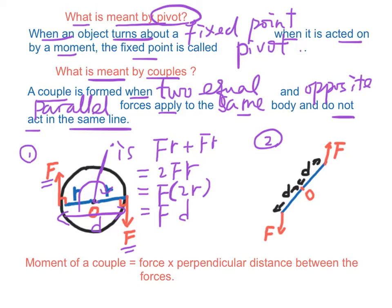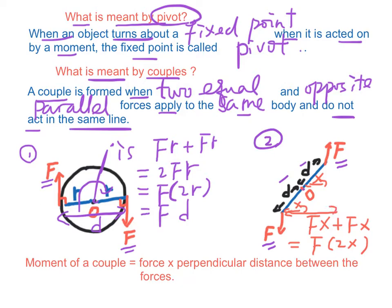Example 2: if the two forces F act in opposite directions on the rod of length 2D, then the total moment of the force about point O is F times X plus F times X, which equals F times 2X. Here 2X is the perpendicular distance between the forces. As a conclusion, the moment of a couple is equal to the force F times perpendicular distance between the forces.